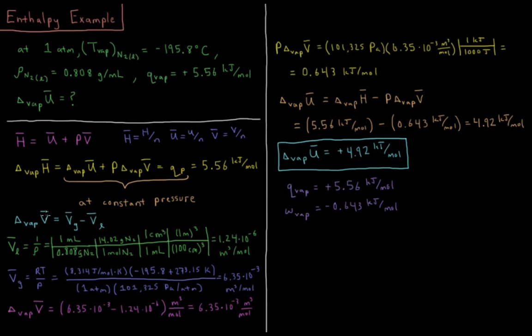So our change in molar volume during vaporization is the molar volume of the gas minus the molar volume of the liquid. The molar volume of the liquid is 1 over the density. So we have 1 milliliter per 0.808 grams of N2. We need to convert the grams of N2 into moles. So we have 14.02 grams of N2 is 1 mole. We have 1 milliliter is 1 cubic centimeter. And 100 centimeters cubed is 1 meter cubed. So this gives us the molar volume of the liquid is 1.24 times 10 to the minus 6 meters cubed per mole.